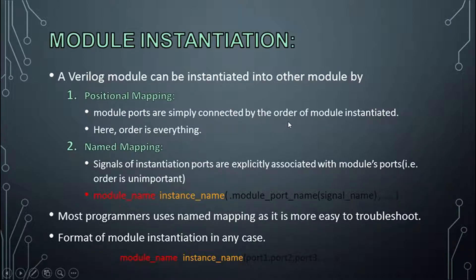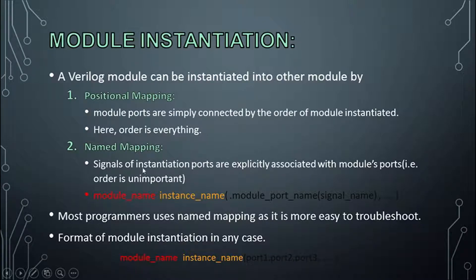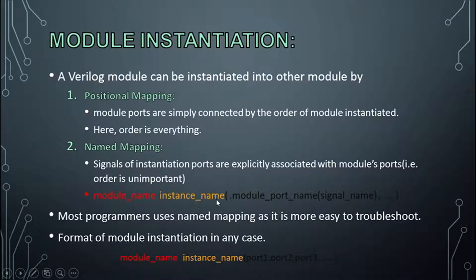In positional mapping, module ports are simply connected by the order of module instantiation — order is everything, so you have to take care of the order in which you define the ports. In name mapping, signals of instantiation ports are explicitly associated with module ports, meaning order is unimportant — you can define them in any order you want.